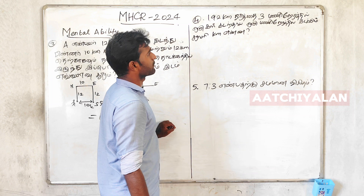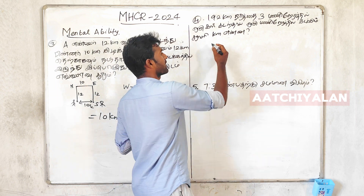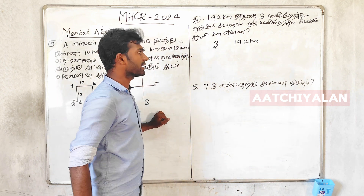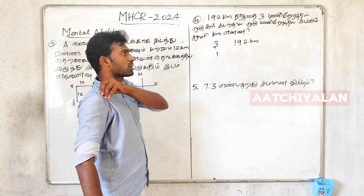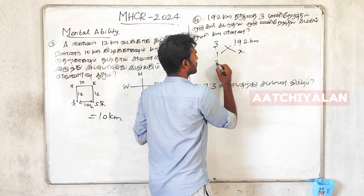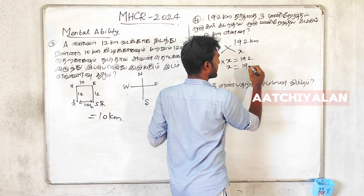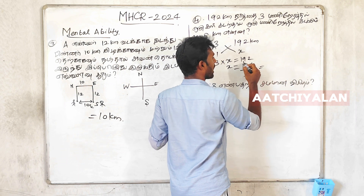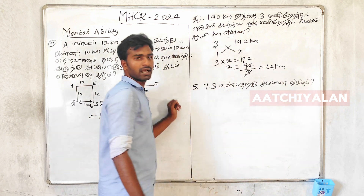If you walk in 192 km, there is a car for 3. Then you walk in 192 km. 1 is equal to 1, 2 is equal to 192, x is equal to 192 by 3. 1 is equal to 1, 3 is equal to 6, 3 is equal to 18, and 1 is equal to 64 km. You are divided into 64 km.